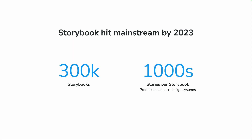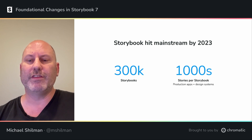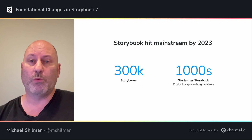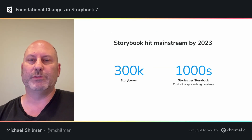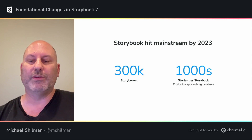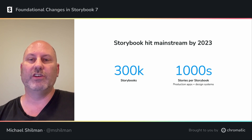Fast forward to today, and Storybook is a mainstream fixture of the front-end toolchain. Now there are over 150,000 public GitHub projects that use Storybook, and we estimate more than double that number of active Storybooks. As Storybook has matured, so has its usage. Today's Storybooks capture complex production design systems and entire apps with data mocking and interaction tests.